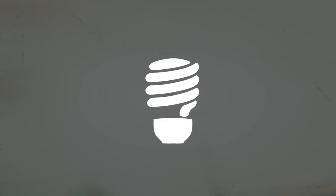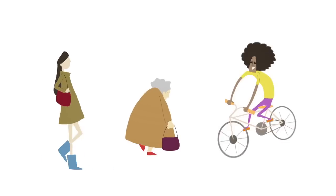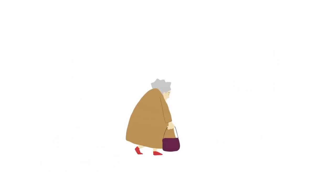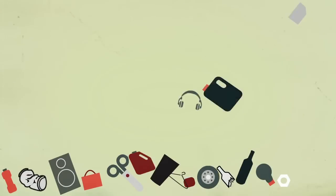We can also encourage our friends and family to use efficient light bulbs and walk or cycle instead of using cars. Not only do we consume enormous amounts of resources, we also produce huge quantities of waste.